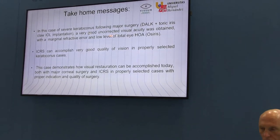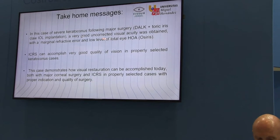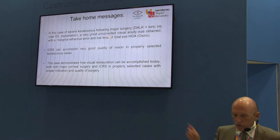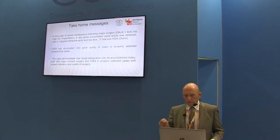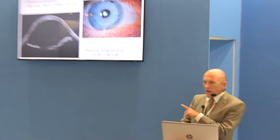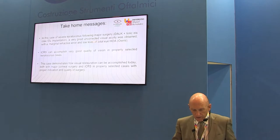This is the other eye which has keratoconus and cross-linking. The case was more advanced. This cornea was different but look here — the PSF is a little bit better but not significantly. In both cases we had a very good outcome. In this case of severe keratoconus following two types of surgery — DALK with toric iris-fixated lens implantation — a very good uncorrected visual acuity was obtained with a marginal refractive error and a very low level of total higher-order aberrations. With this technology we could see not only the anatomy but also the performance, with similar quality of vision between both eyes. The best eye had intracoroneal rings and they did a good job.